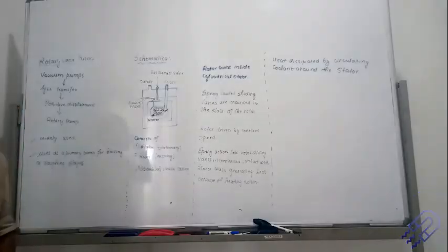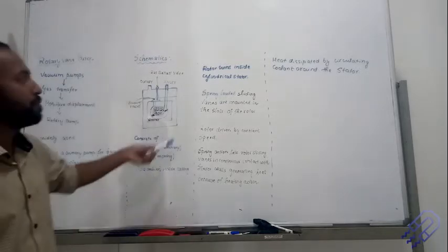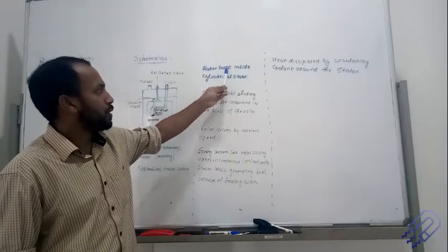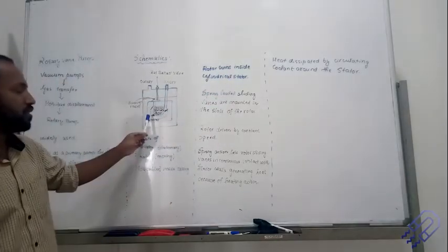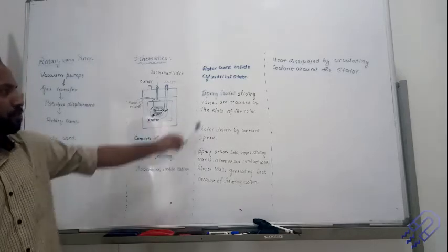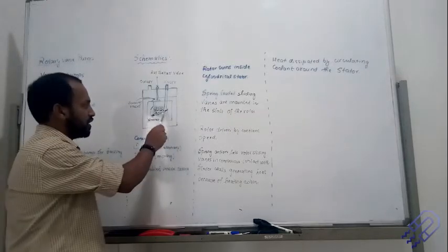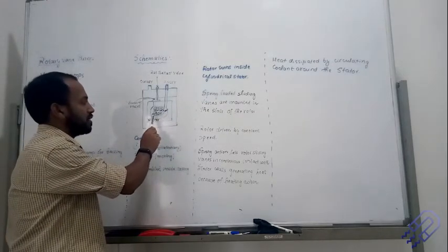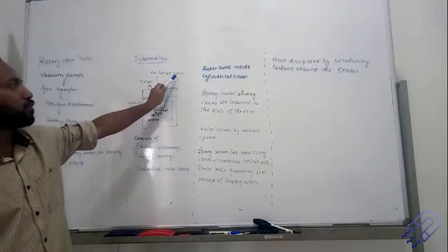When a rotary pump starts, the motor moves and you will always keep hearing the sound of the motor. The rotor turns inside the cylindrical stator — the stator remains fixed and the rotor keeps moving. Spring-loaded sliding vanes are mounted on the slots of the rotor.